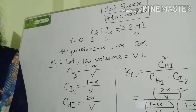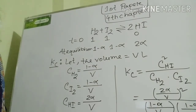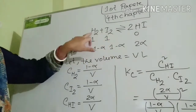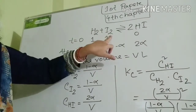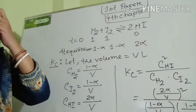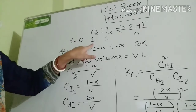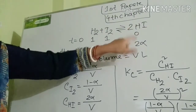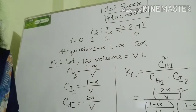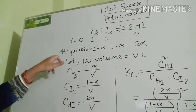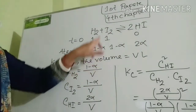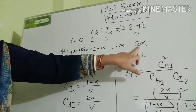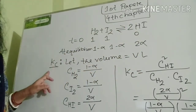Here I have taken the rate of decomposition as alpha. The reaction is: one mole hydrogen reacts with one mole iodine to form two moles hydrogen iodide. When time is zero, the mole number of hydrogen is one, iodine is also one, and hydrogen iodide is zero. At equilibrium, hydrogen is one minus alpha, iodine is one minus alpha, and hydrogen iodide is two alpha. Now we derive Kc.